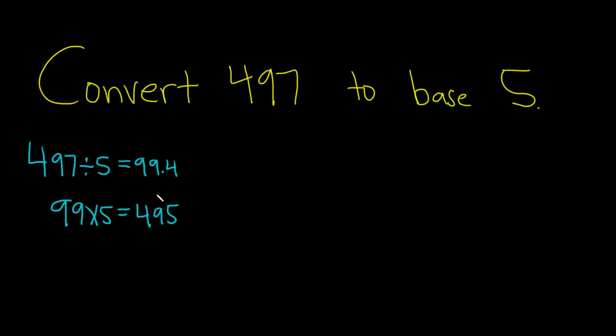Now you can find the remainder. 5 goes into 497 99 times, and what's left over? You subtract these numbers: 497 minus 495. The remainder is 2.